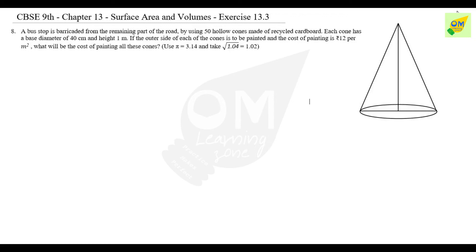The given values are height and diameter. The diameter is 40 centimeters, so radius is 20 centimeters, which equals 0.2 meters. Height is 1 meter. Per meter, radius is 0.2 and height is equal to 1 meter. So, l is equal to root of h² plus r².